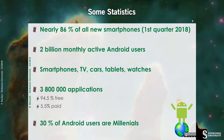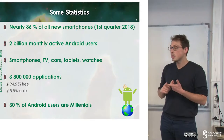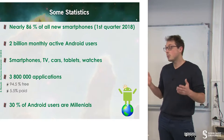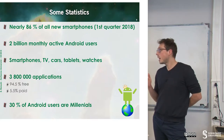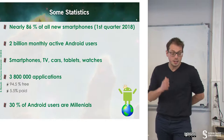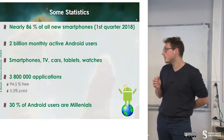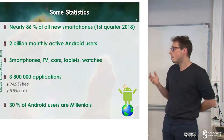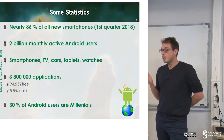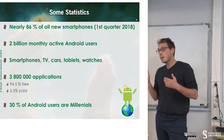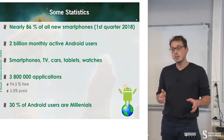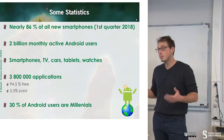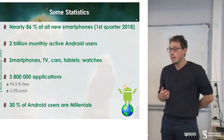Android runs also on TVs, cars, watches, and phones. There are almost 3 million applications and 85% of these applications are free, while only 5% are paid applications. This means that we have to target free applications and embed some way to make money if we want to develop applications on Android.